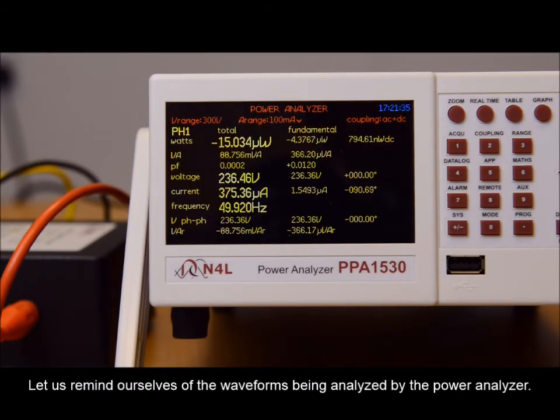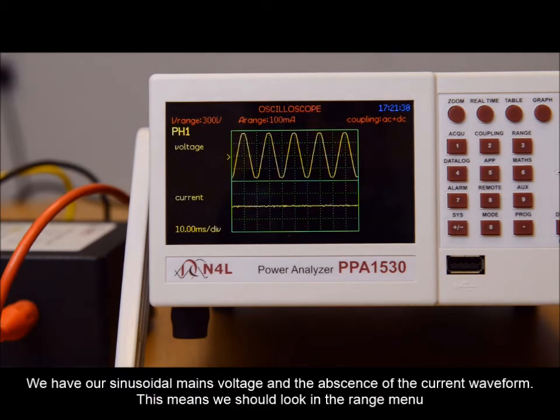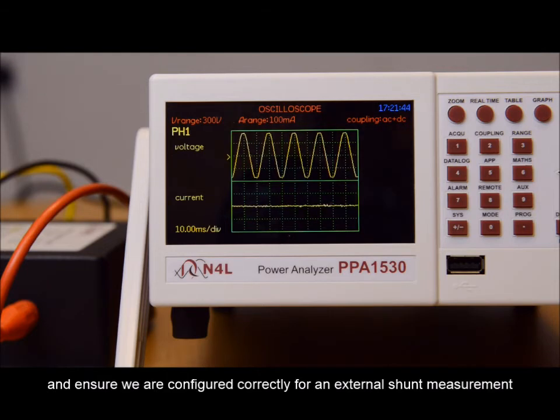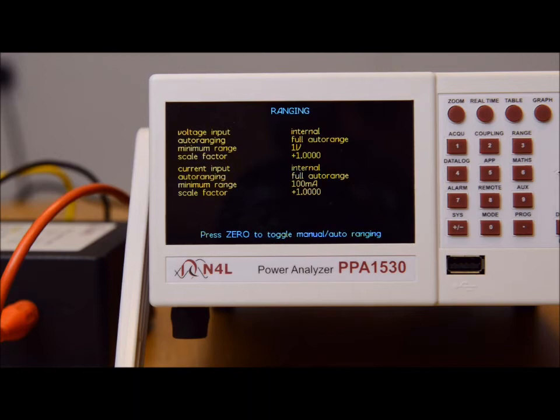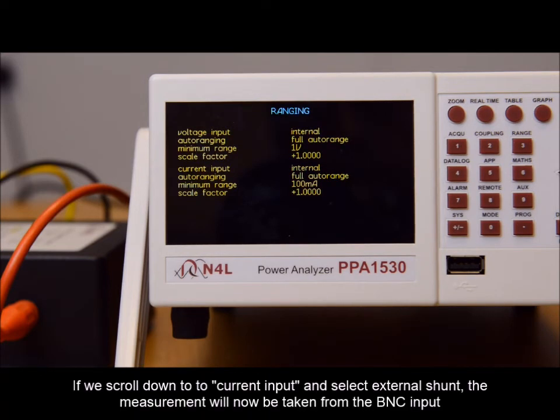Let us remind ourselves of the waveforms being analyzed by the power analyzer. We have our sinusoidal mains voltage and the absence of our current waveform. This means we should look into the range menu and ensure that we are configured correctly for the external current measurement. If we scroll down to the current input and select external shunt, the measurement will now be taken from the BNC input.